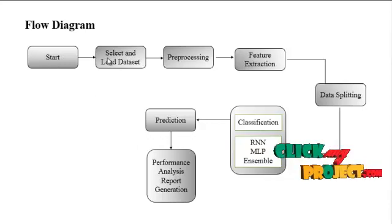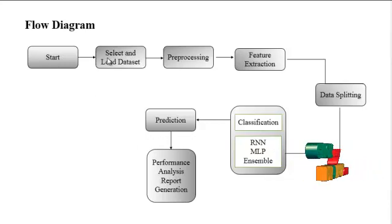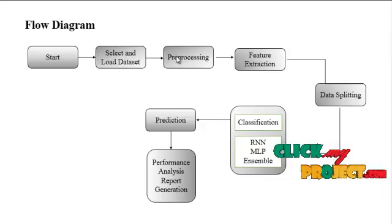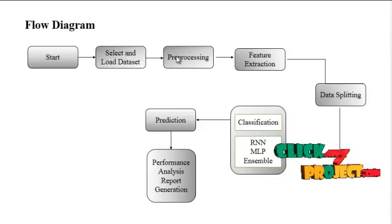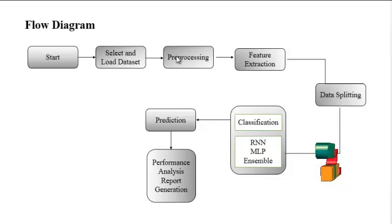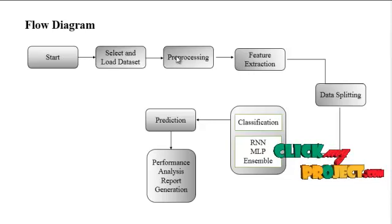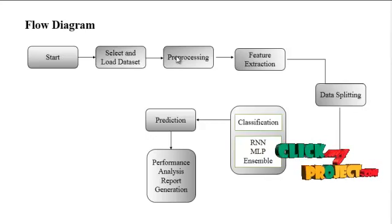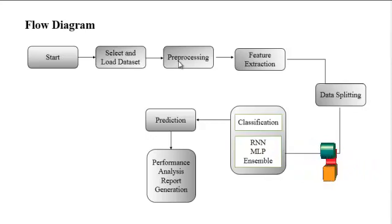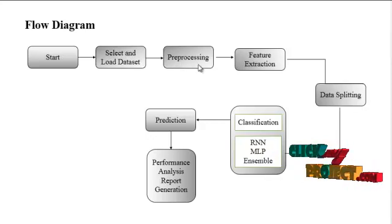First, we start our program, then select and load the network traffic dataset. Next is pre-processing, which involves data cleaning and checking null values. If there are any null values, we replace them with zero values. Any unwanted columns are also removed in this process. Label encoding is then applied to change categorical values to numerical values. All these processes are contained in pre-processing.